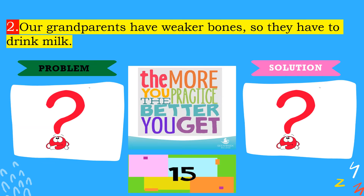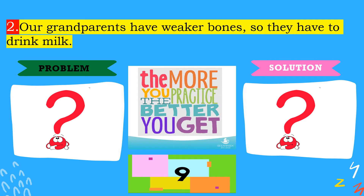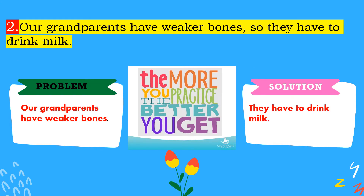For the second sentence: 'Our grandparents have weaker bones, so they have to drink milk.' What is the problem and the solution? The problem is 'our grandparents have weaker bones,' and the solution is 'they have to drink milk.'